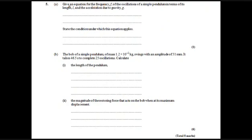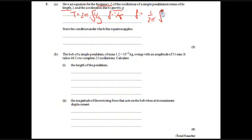Now the longer answer question. Part one: give the equation for the frequency of oscillation of a simple pendulum in terms of its length and g. We know t = 2π√(l/g) and f = 1/t, so f = 1/(2π) · √(g/l). The condition for this to hold is small amplitude oscillations — usually less than about 10 degrees — it's an approximation that improves as amplitude decreases.